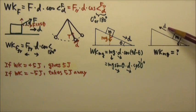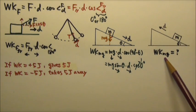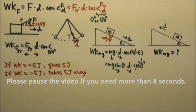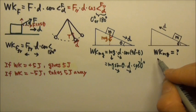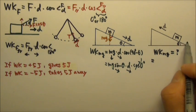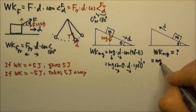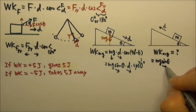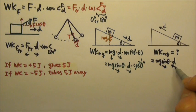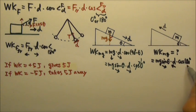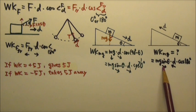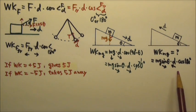What if the box slides up the incline for distance d? What would the work done by mg be? Looking at the parallel component, the component of mg along the incline is mg·sinθ going down the incline, while the displacement goes up the incline. So the angle between the two is 180 degrees, and cosine 180 is negative one — the force does negative work.